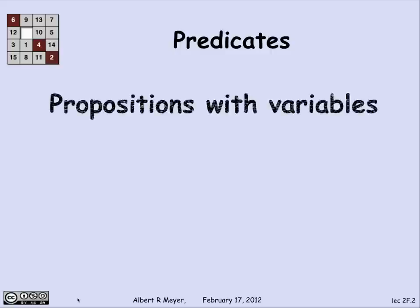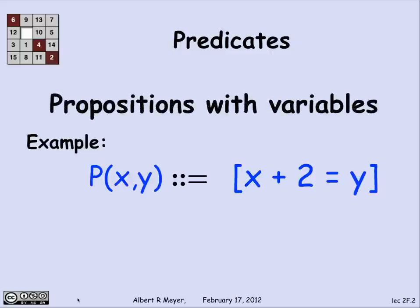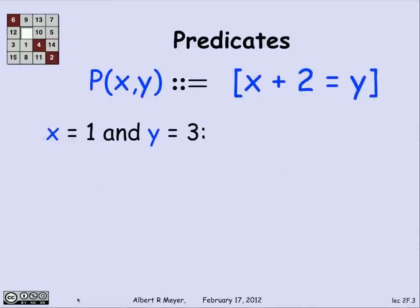So what's a predicate? Basically, a predicate is a proposition except it's got variables in it. Here's an example: P(x,y) is the predicate that depends on x and y, and let's say it's defined to be x+2=y. In order to figure out whether or not a predicate is true, I need to know the values of the variables. So if I tell you that x is 1 and y is 3, P(1,3) is true because 1+2 equals 3.